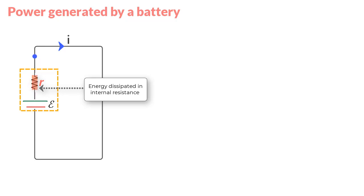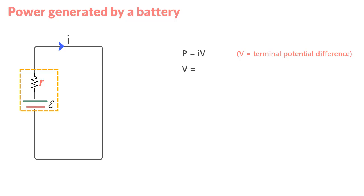So let us see how power, current and EMF of a battery relate through a simple equation. Well, we know that the power a battery can generate is I times V where V is the terminal potential difference and I is the current in the circuit. And we also know that the terminal potential difference is EMF value less the potential drop across the internal resistance of the battery.